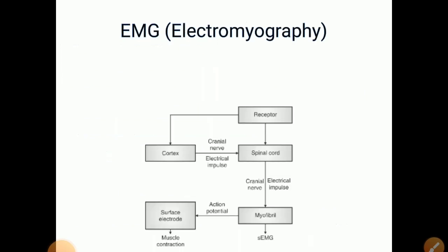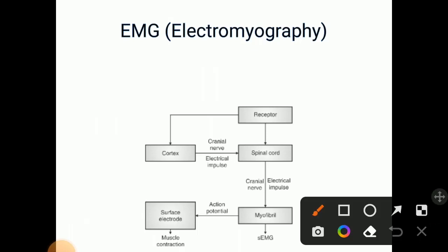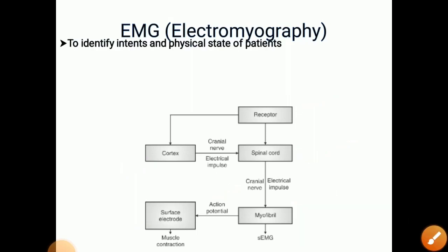EMG, electromyography. Here the diagram shows the receptor gives signal to cortex and spinal cord. This electrical impulse produced is given to myofibril. According to this, action potential is given to surface electrode and it gives us muscle contraction. This is used to identify intense and physical state of patients. Environmental variables affect its working.